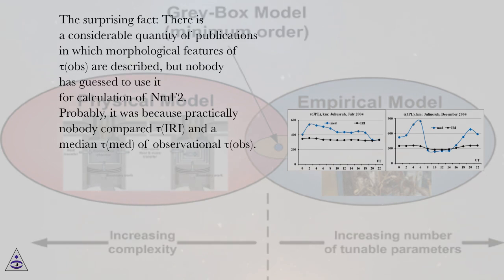The surprising fact: there is a considerable quantity of publications in which morphological features of tau OBS are described, but nobody has guessed to use it for calculation of NMF2. Probably, it was because practically nobody compared tau IRI and a median tau MED of observational tau OBS.